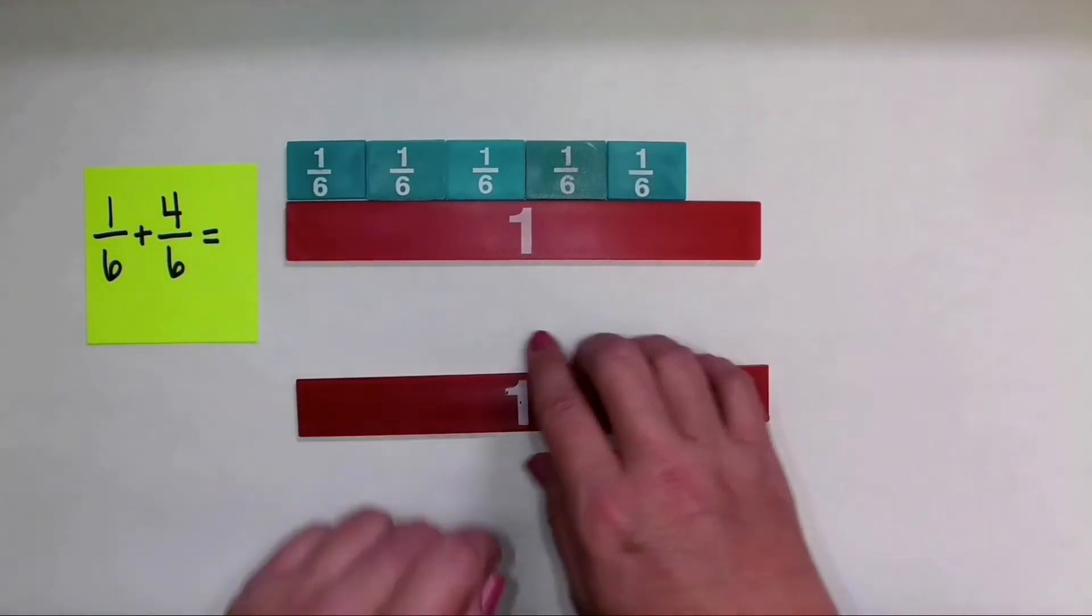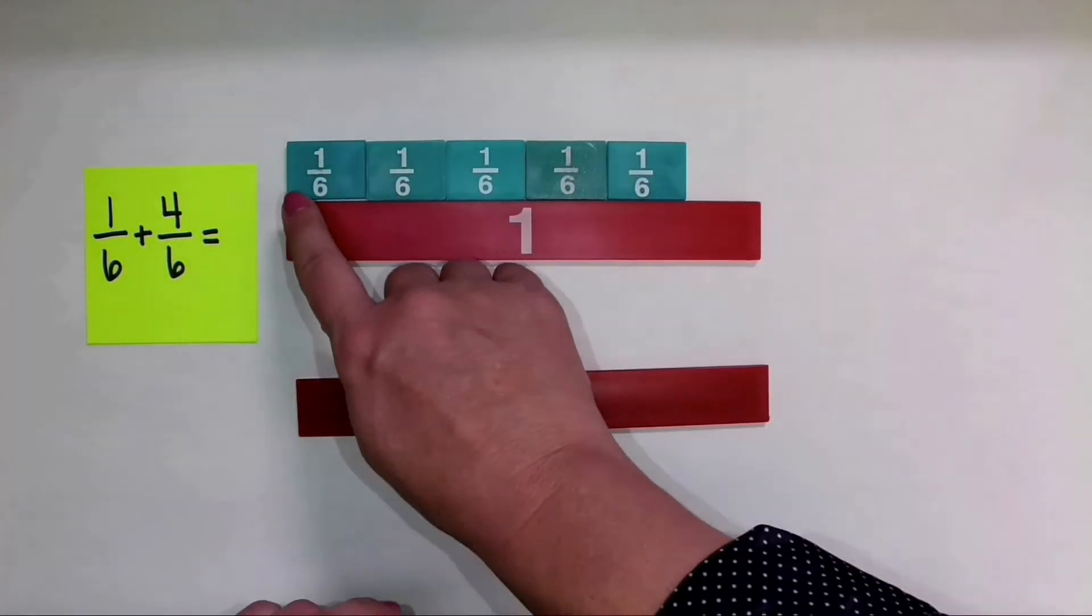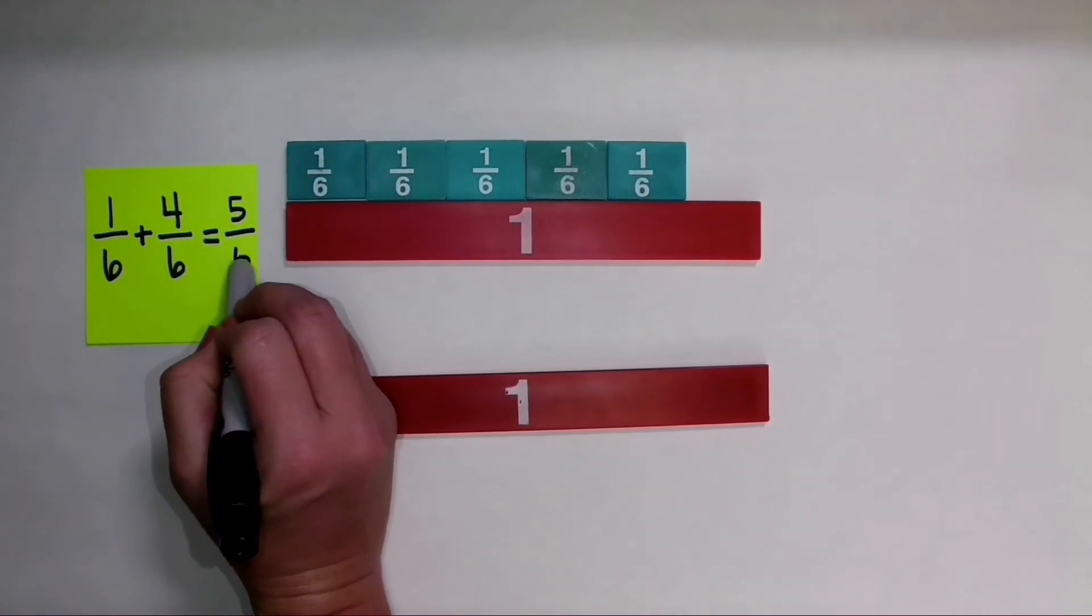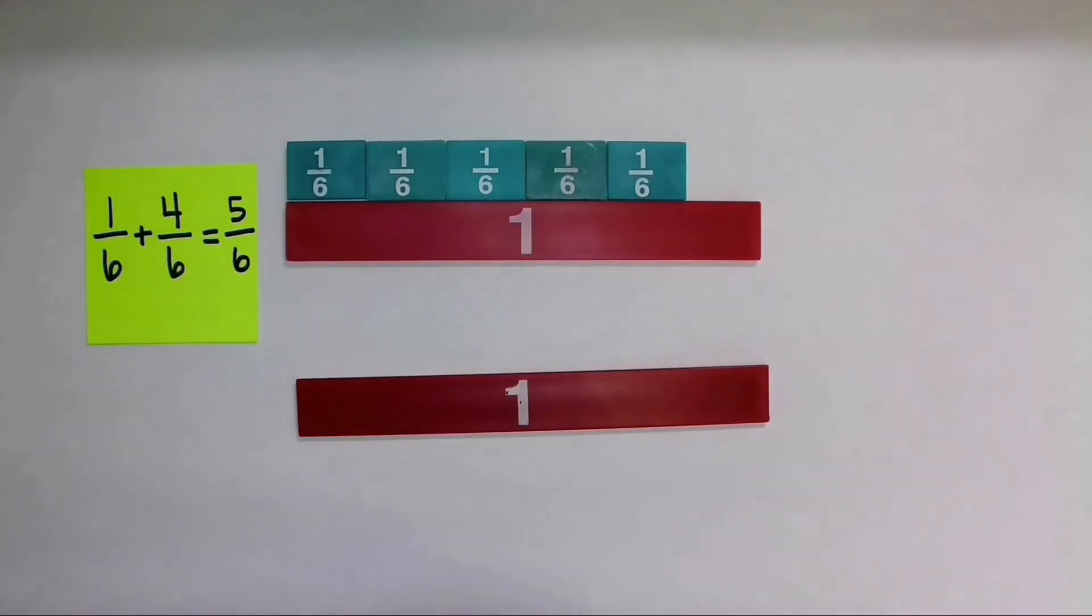So when I have one-sixth plus four-sixths, our sum is five-sixths. And I could go ahead and write that right here. It's always nice to write the abstract form of the number when we are working with a concrete model like these fraction tiles.